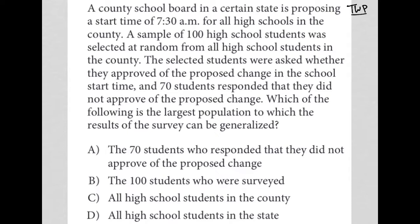The next sentence: the selected students were asked whether they approved of the proposed change in the school start time, and 70 students responded that they did not approve. So 70 did not approve — N.A. for not approve — and I'm assuming that 30 students did approve. There could be some number of undecided in there, but I'm going to go with this for right now.